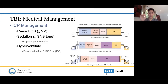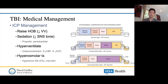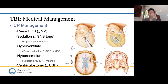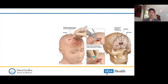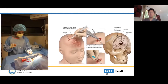Hyperventilation can cause vasoconstriction — target an end-tidal CO2 of about 30. This should be done transiently in the acute phase; long-term use can decrease cerebral blood flow, so don't use it for many days. Hyperosmolar treatment — either mannitol or hypertonic saline — is another option. Finally, ventriculostomy: going through Kocher's point, aiming at the nasion and the tragus, we pass the catheter to drain CSF and therefore decrease intracranial pressure.